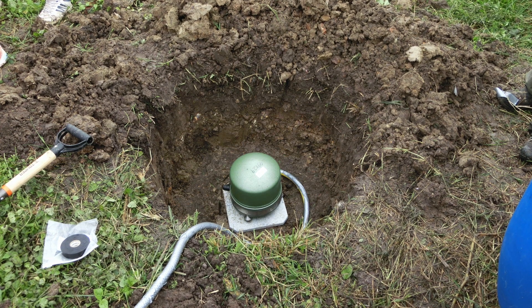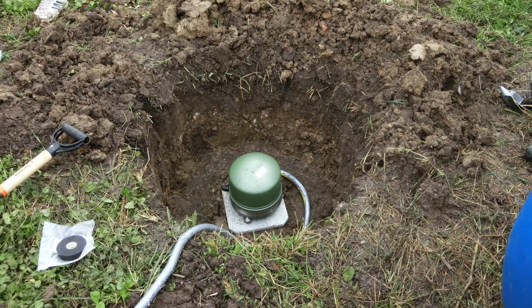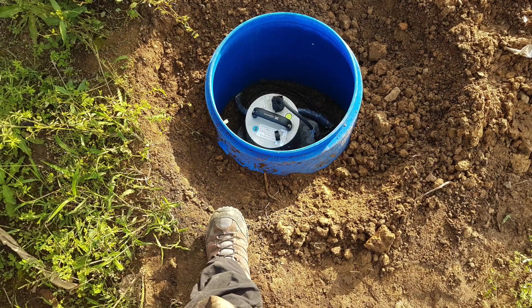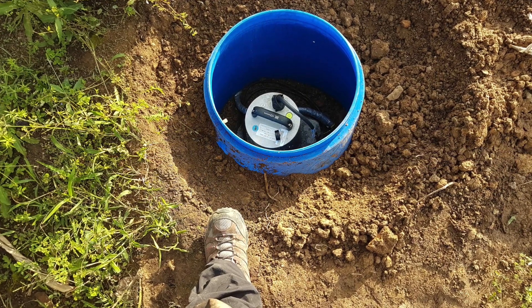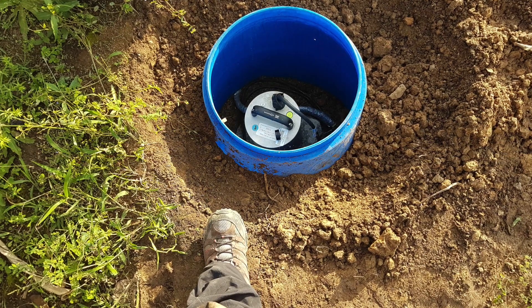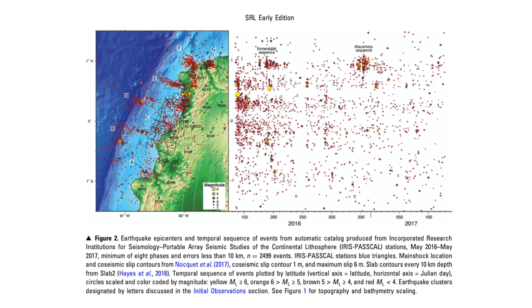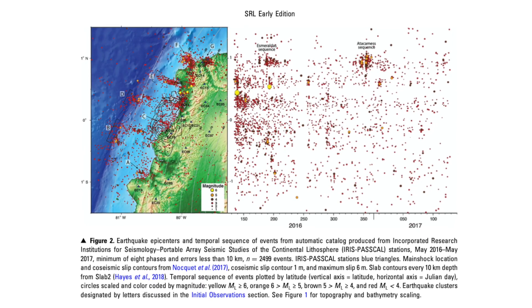What we were able to determine — the number of instruments we had provided us a lot more information and a much higher resolution picture of what's happening along that part of the margin than was possible before. One of the things we've learned is that the ruptures along that part of the margin — the size of them, the width and the length — seem to be controlled primarily by topography or structure on the subducting plate.